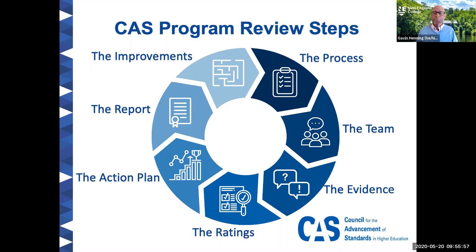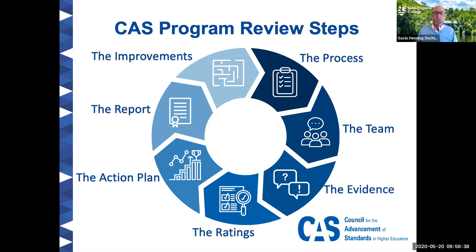Once the process is planned and the team is built, the third step is gathering the evidence — what evidence will be needed to make the ratings of the standards? The next step is actually using that evidence for those ratings, using the self-assessment guide as a worksheet and framework. Once ratings are done and the analysis of what's working and what areas need improvement is complete, there needs to be an action plan. The next step is building that action plan, then pulling together a final report that summarizes the ratings, identifies all the strategies within the action plan, and is disseminated to appropriate constituencies. Last is making those improvements — thinking through resources, timeline, and who's responsible to oversee those improvements.